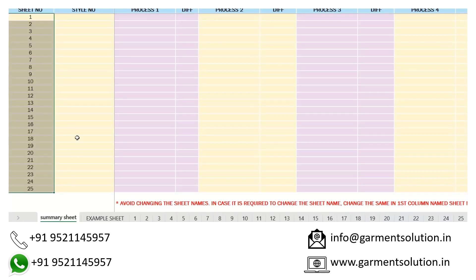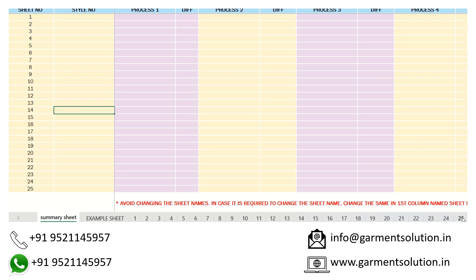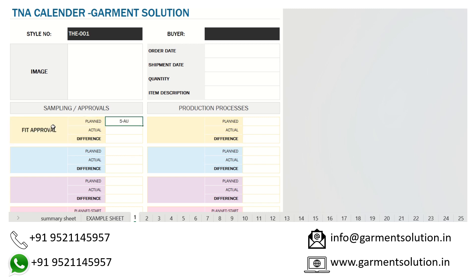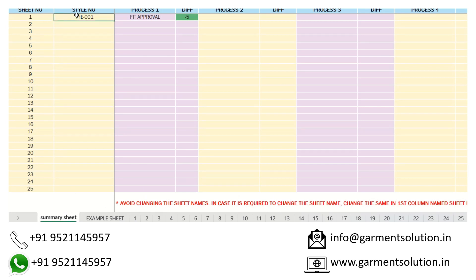It also has a summary sheet. One file will have 25 sheets for 25 shells. Whatever you fill in — the shell number, like THV001, process name, load date, and actual date — it will keep showing in the summary sheet as well.